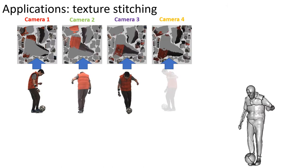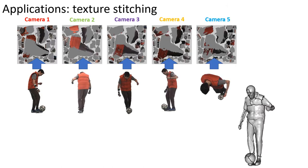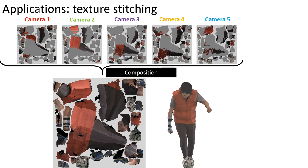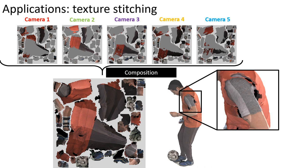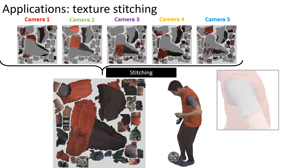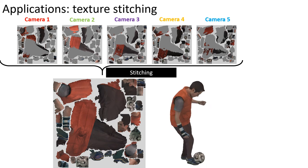We support stitching together multiple views of a static model. Naive copying of best-viewed pixels reveals lighting variations across camera images, and leaves undefined texels in regions not seen by any cameras. Stitching in the gradient domain, we obtain a seamless texture that captures the detail of the input.